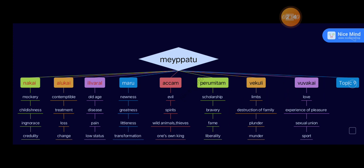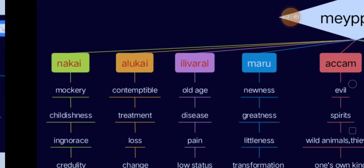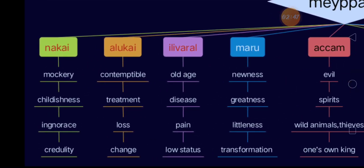Nakhai is the outcome of four sources: mockery, childishness, ignorance, and credulity. The source of genuine Alukai is fourfold: contemptible treatment, loss, change for the worse, and poverty. The source for Illiberal is also fourfold: old age, disease, pain, and low status.